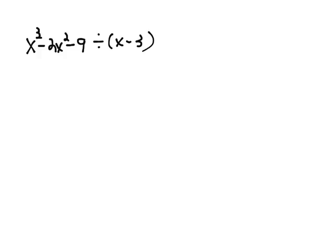We want to divide the polynomial x³ - 2x² - 9 by x - 3. The first method we're going to use is long division, just like you did in elementary school.